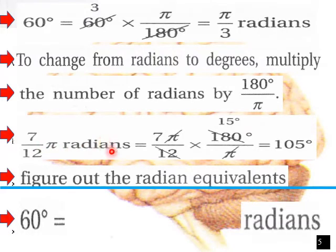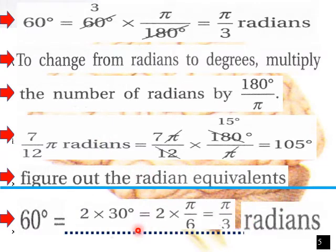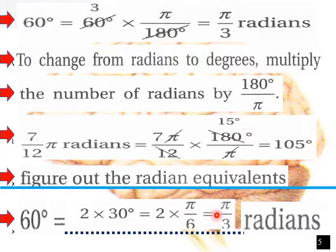So 60 degrees — how many radians is that? To do that, we can think of it as 2 times 30 degrees equals 2 times π/6 radians, which when you simplify gives you π/3 radians. That's another way of figuring radians from a degree measure.